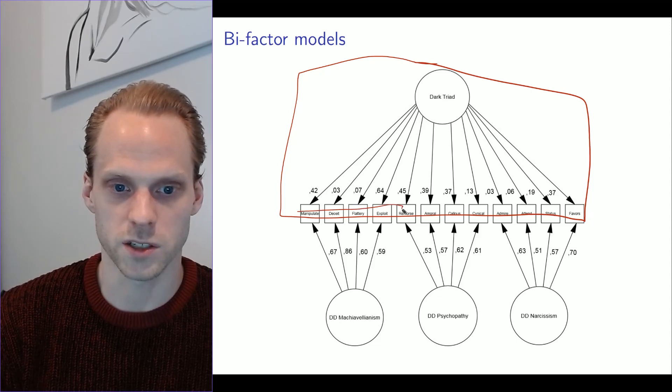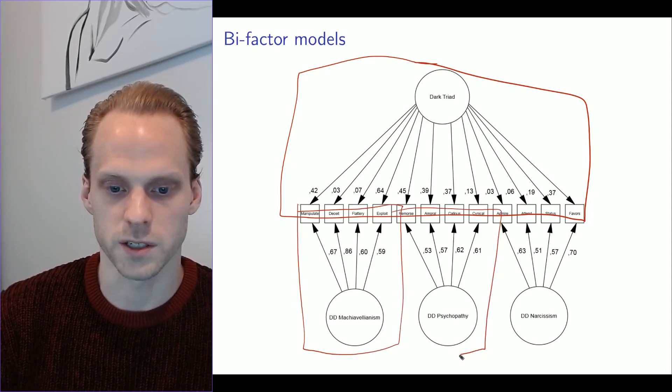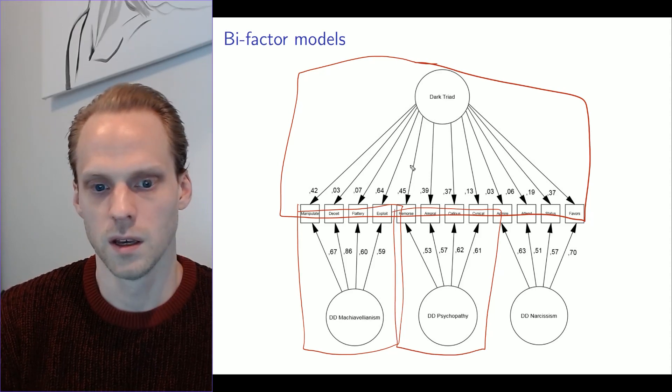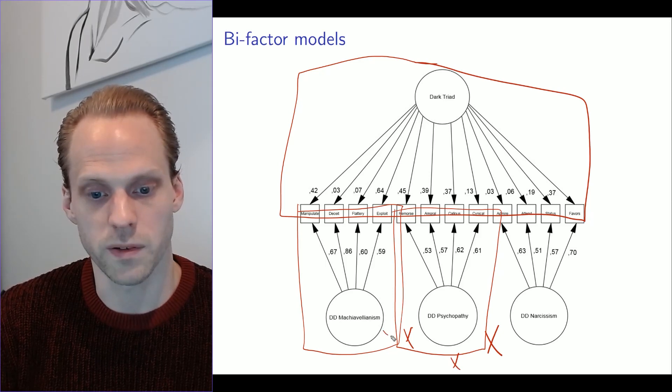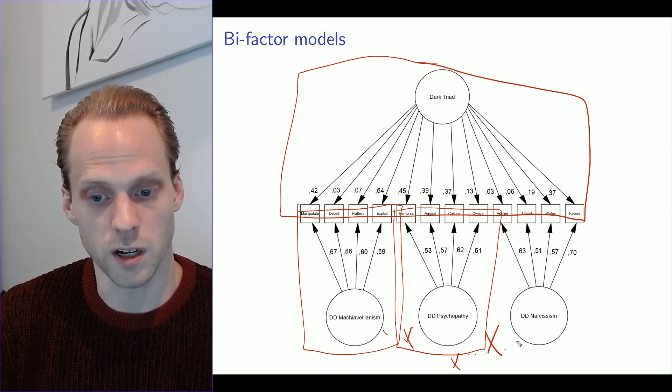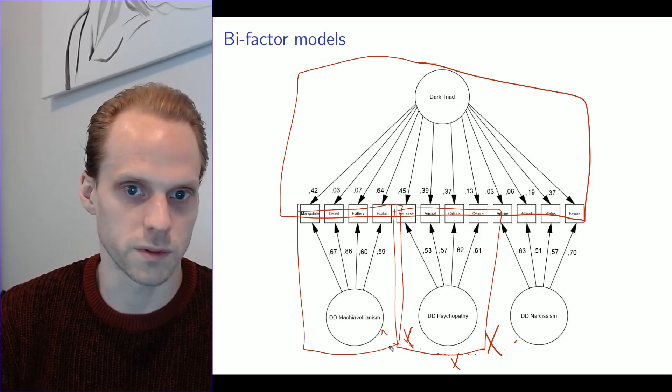And then in each subdomain, we have specific items, factors. And these are not correlated to each other. And that's a very important property of these bifactor models. Sometimes you see they are correlated to each other, but then the whole bifactor model idea sort of starts to collapse.